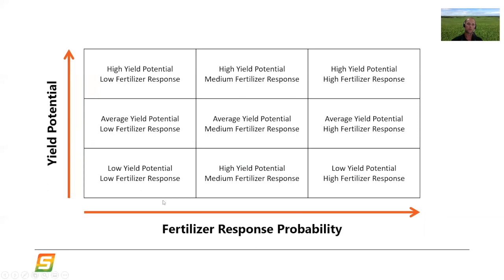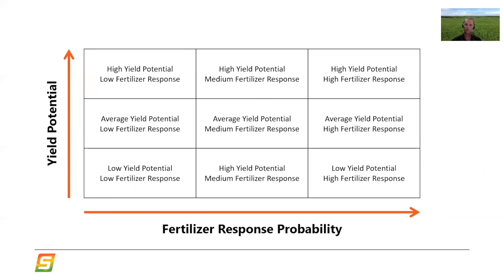A low yield potential area with low fertilizer response might be like a saline depression — it's always going to be low yielding because it's salt affected, and it's also going to have low fertilizer response partly because of the low yield, and partly because those areas have heaps of nutrients from being over-fertilized for many years. We might also have an eroded knoll with relatively low yield potential but actually quite high fertilizer response to nutrients like phosphorus or sulfur. In the case of an eroded knoll, it might respond really well to phosphate because all the phosphate has been eroded off that area along with the topsoil.